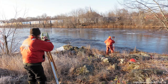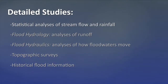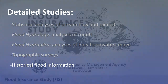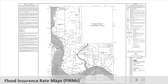As federal funding became available for floodplain mapping, FEMA performed more thorough flood studies for many communities. Known as detailed studies, they involved statistical analyses of stream flow and rainfall records or analyses of runoff in the watershed, known as hydrology; analyses of how floodwaters move through the river and floodplain, known as hydraulics; topographic surveys; and information obtained from the community about historical flood events. Detailed studies result in the publication of flood insurance studies, known as FIS reports, and new flood insurance rate maps, or FIRMs, both of which are provided to the community.